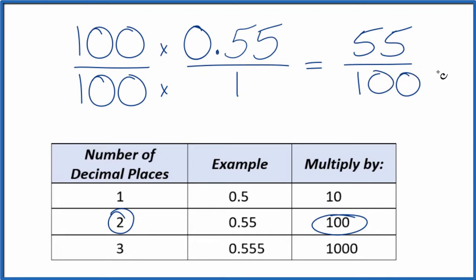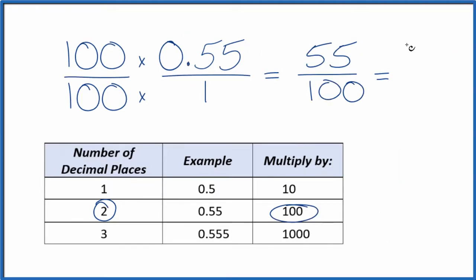But we can simplify this further, because 5 goes into 55 and 100. 55 divided by 5, that's 11, and then 100 divided by 5 is 20. So we end up with the decimal 0.55 equaling 11 over 20.